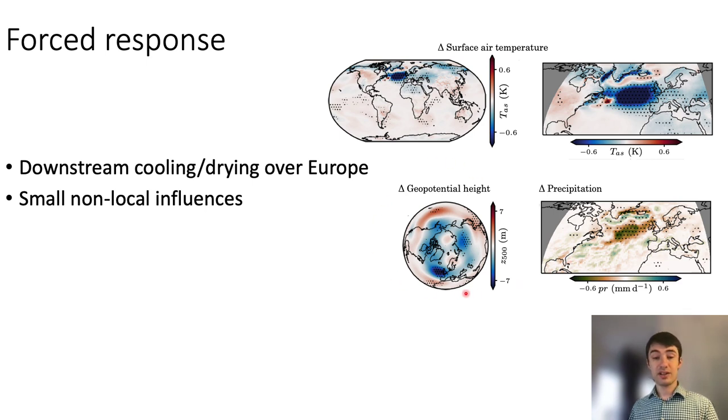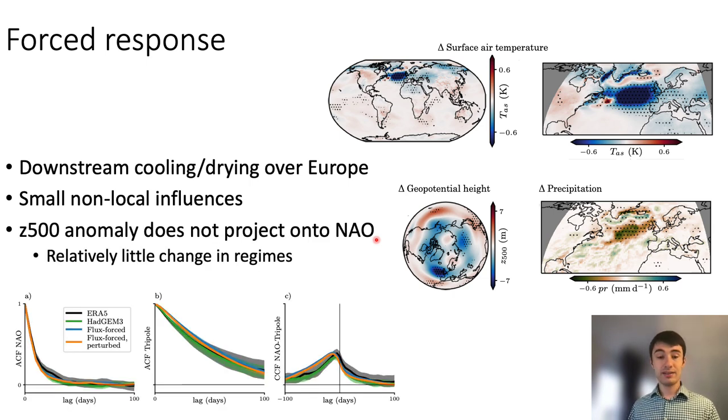The changes to atmospheric circulation are relatively minor. For example, here shown the change in Z500 geopotential height, which is much smaller than inter-annual variability. And the Z500 anomaly also does not appear to project onto the NAO or other atmospheric dynamics.